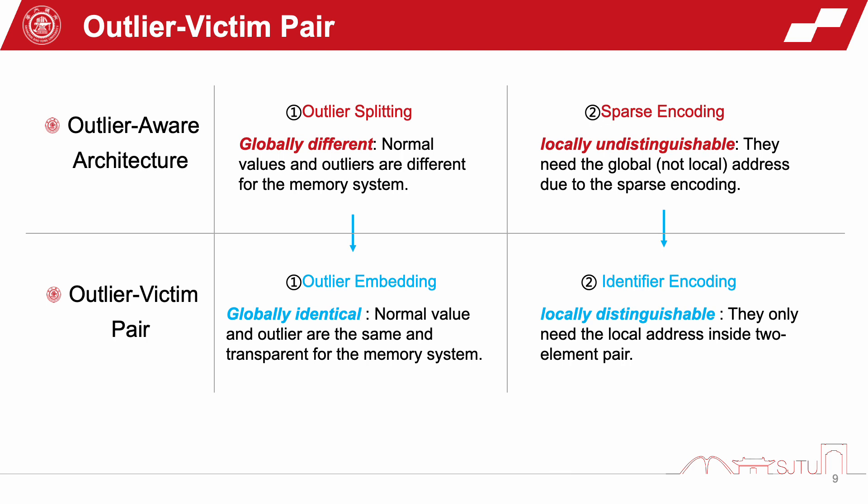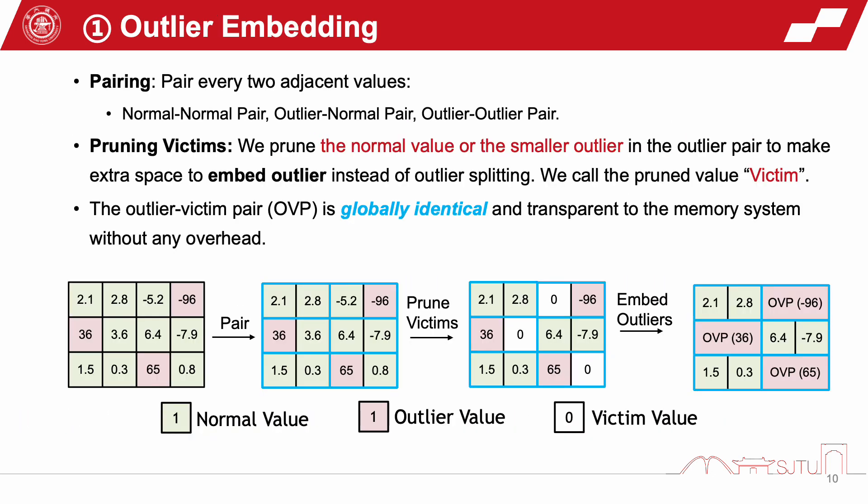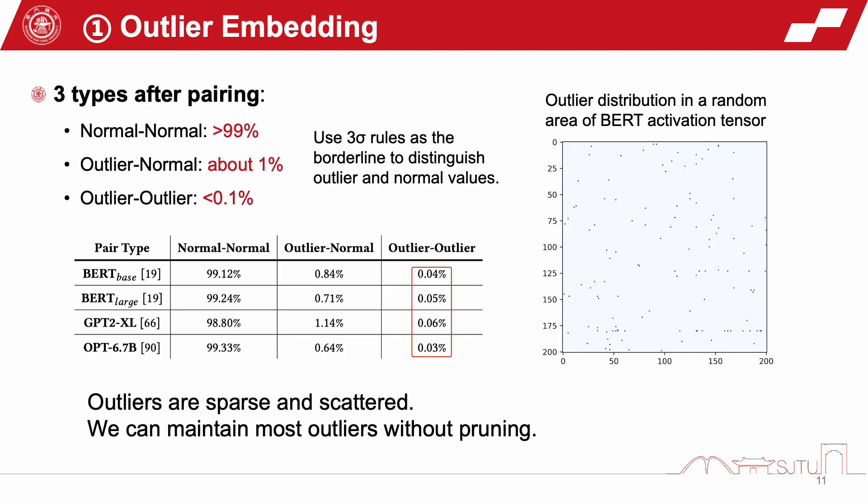The outlier-victim pair only needs the local address inside the two-element pair. This is the outlier embedding, which has three steps to embed the outlier into normal values and make them globally identical. The outlier embedding is based on the insight that outliers are sparse and scattered, and we can maintain most of the outliers without pruning.